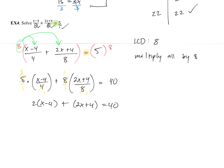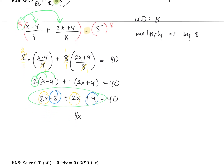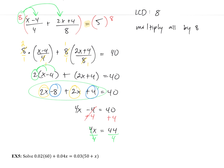Now we have a normal-looking equation. Use the distributive property to get 2x minus 8 plus 2x plus 4 equals 40. Combine like terms: 2x plus 2x is 4x, and negative 8 plus 4 is negative 4, giving 4x minus 4 equals 40. Add 4 to both sides: 4x equals 44. Divide both sides by 4 and we get x equals 11.